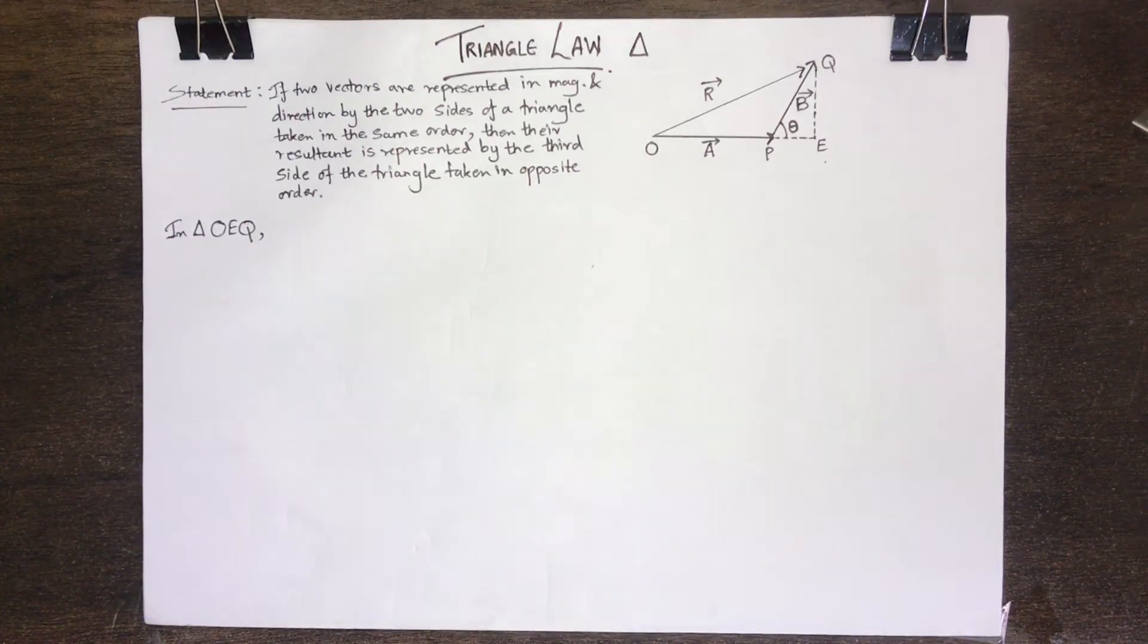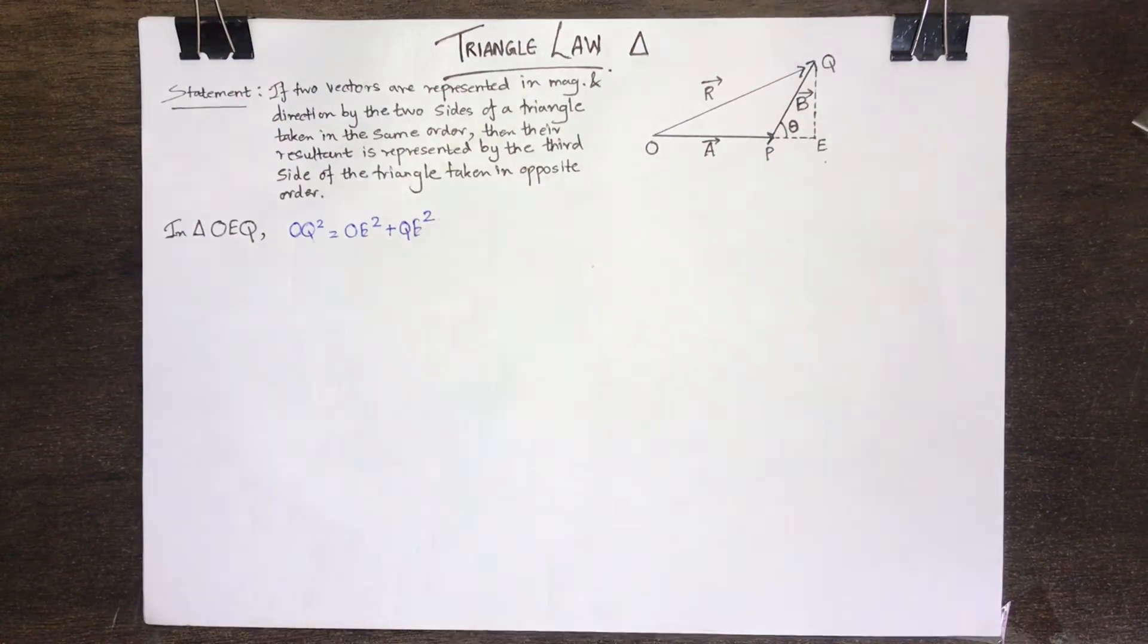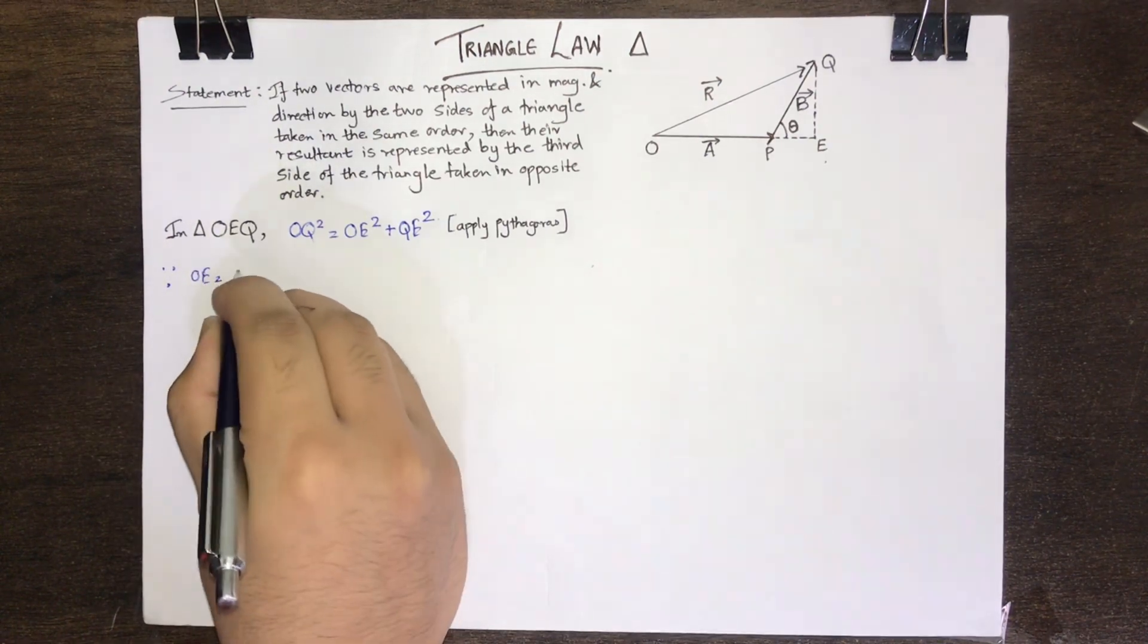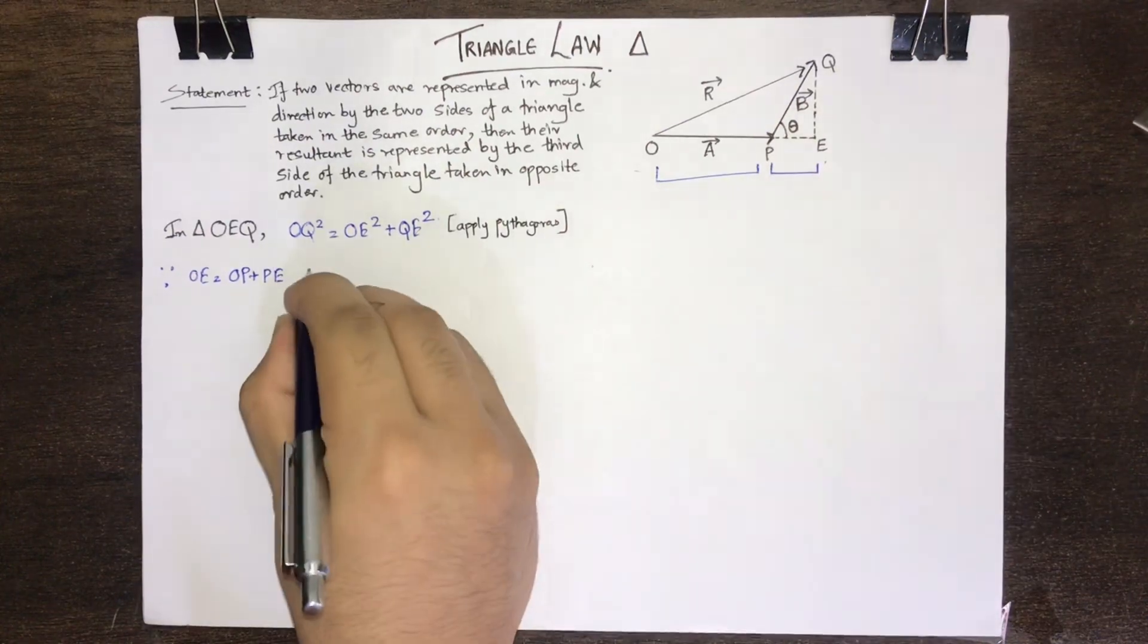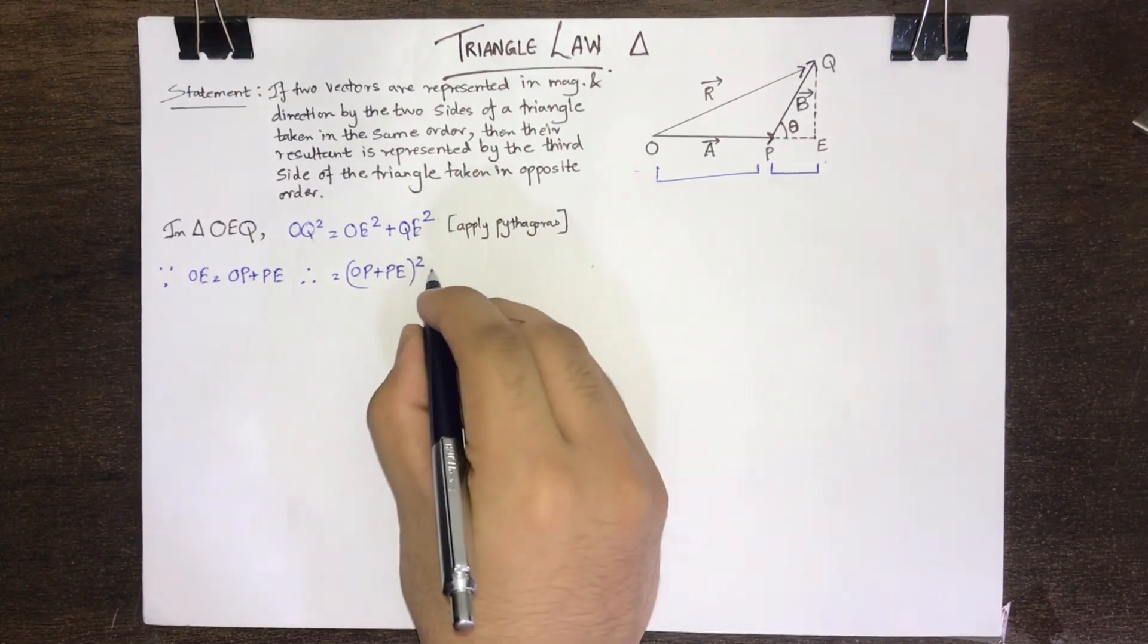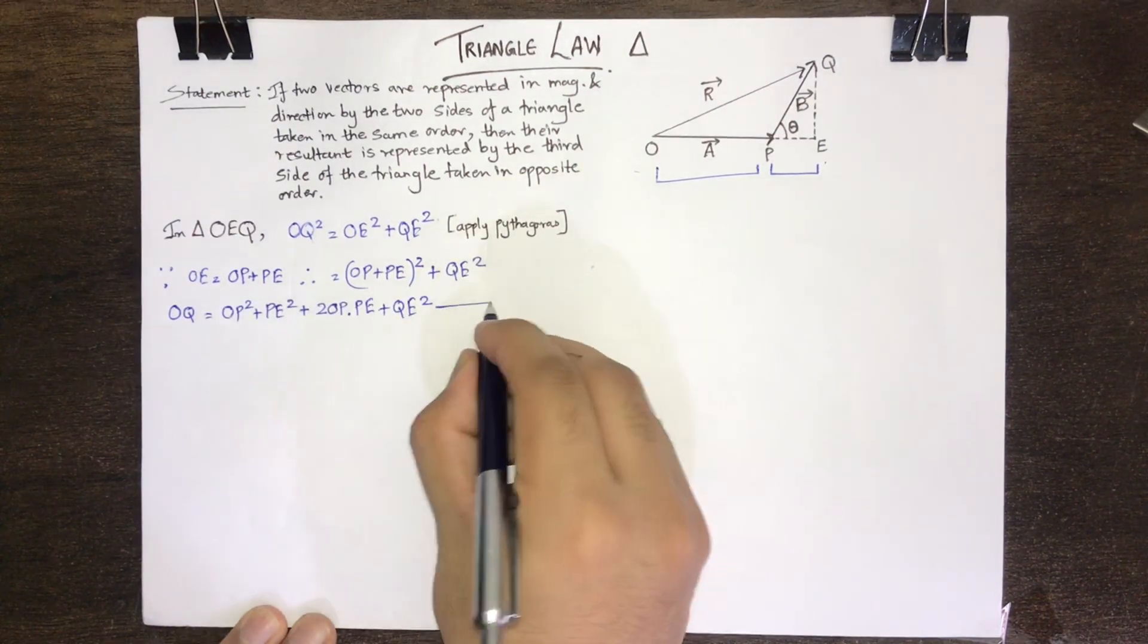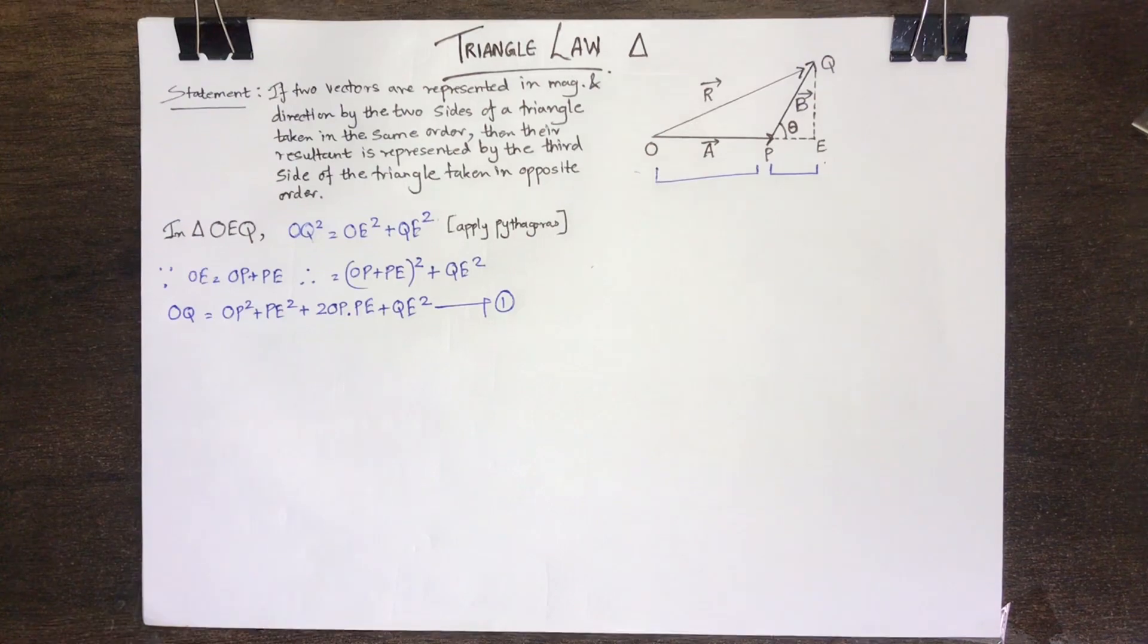Now in triangle OEQ, OQ square is equal to OE square plus QE square. As the side OE is equal to the sum of OP plus PE, therefore OQ square is equal to OP plus PE whole square plus QE square. Doing the A plus B whole square expansion, we get this as our first equation.